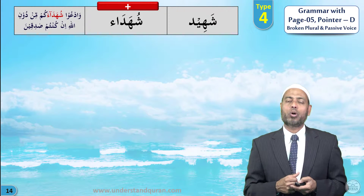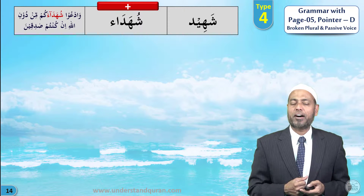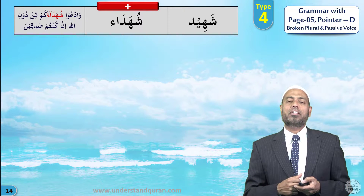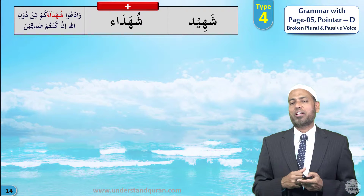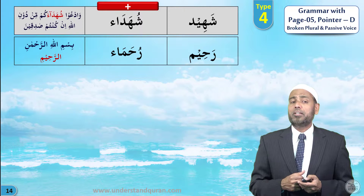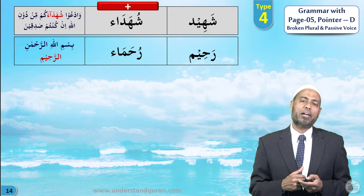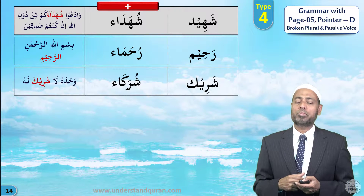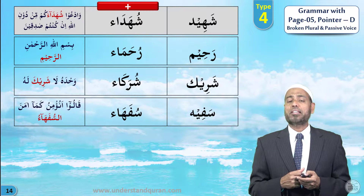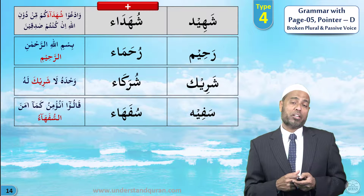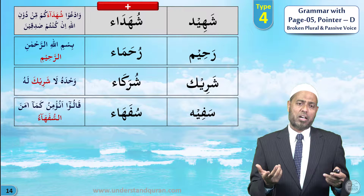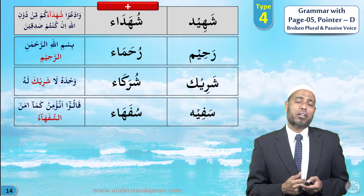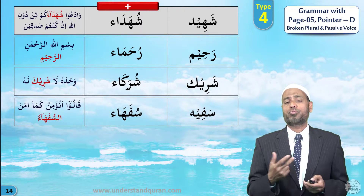Let's take the fourth type. Shahid means witness; plural is shuhada' — in this context meaning helpers: wa-atu shuhada'akum min dunillah, bring your helpers other than Allah, for bringing a surah like the Quran. Rahim means merciful; plural is ruhama'. Sharik means partner — Allah is wahdahu la sharika lah; plural is shuraka'. Safih means fool; plural is sufaha' — qalu a-nu'minu kama amana s-sufaha', should we believe as the fools believed?